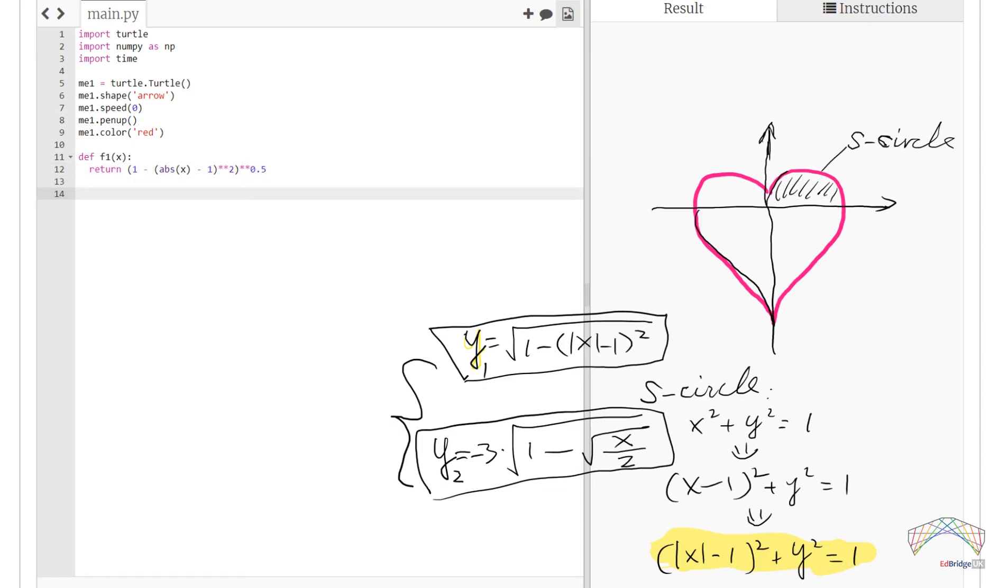And similarly, we should define the second function, which is called f2 of x. The function returns minus 3 times 1 minus something, where the something is the absolute of x over 2 square root, and another square root at the outside of the bracket.